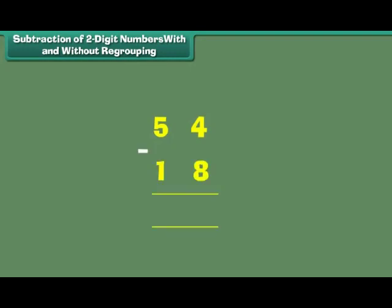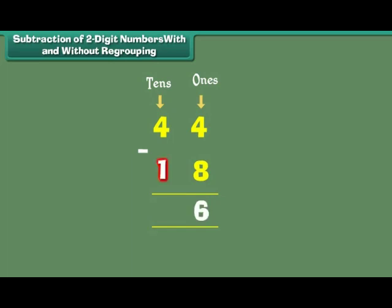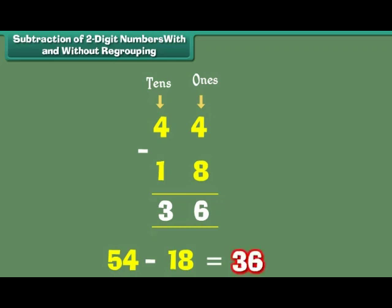What is 54 minus 18? 54 has 5 tens and 4 ones. We want to remove 8 ones. We regroup 1 ten as 10 ones. Now we have 14 ones and 4 tens. We remove 8 ones from 14 ones, leaving 6 ones. We remove 1 ten from 4 tens, leaving 3 tens. Therefore, 54 minus 18 is equal to 36.